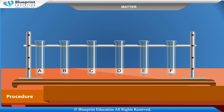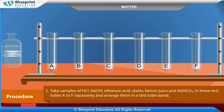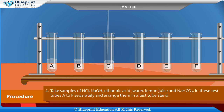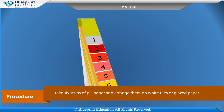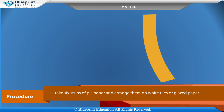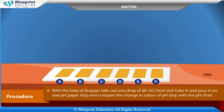Procedure: Take six clean and dry test tubes and mark them A, B, C, D, E, and F. Take samples of dilute hydrochloric acid solution, dilute sodium hydroxide solution, dilute ethanoic acid solution, tap water, lemon juice, and dilute sodium bicarbonate solution in these test tubes A to F separately, and arrange them in a test tube stand. Take six strips of pH paper and arrange them on white tiles or glazed paper.